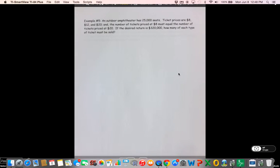Alright guys, example number five. We have an outdoor amphitheater, it's 25,000 seats. Ticket prices are $8, $12, and $20. The number must equal the number of desired returns. How many of each type of ticket?